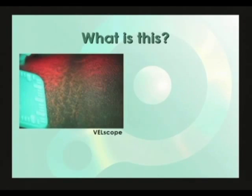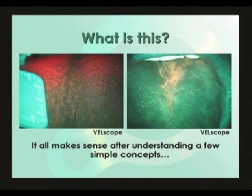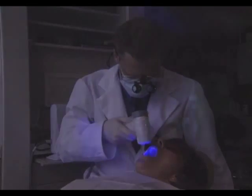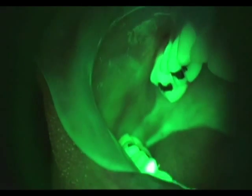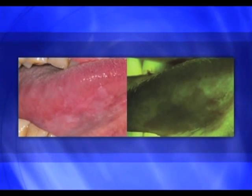After understanding a few simple concepts, fluorescence visualization with VELscope makes sense and can become an invaluable tool to help you see the oral cavity with a second set of eyes. One of the main purposes of this video presentation is to help you make the transition into this world of oral tissue fluorescence. You'll learn enough about how VELscope and tissue fluorescence work so that you'll begin to understand what you see and, most importantly, relate it back to what you observe under white light.